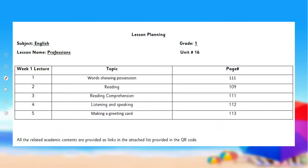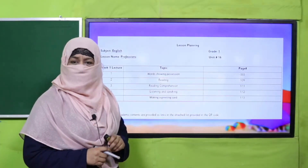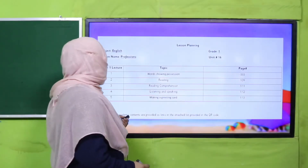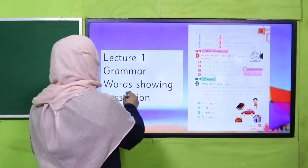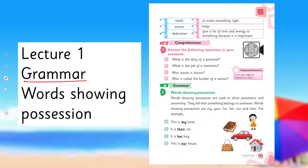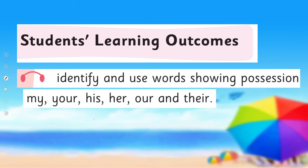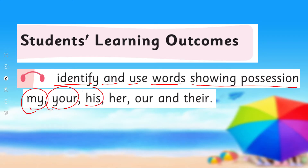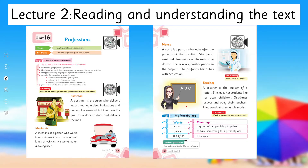First we'll look at this and after that we'll discuss what this unit is all about. Lecture 1, under the title of grammar, we are going to learn about words showing position and we'll cover the SLO: identify and use words showing possession — my, he, his, her, our, and their. Lecture 2 will start reading and understanding the text.